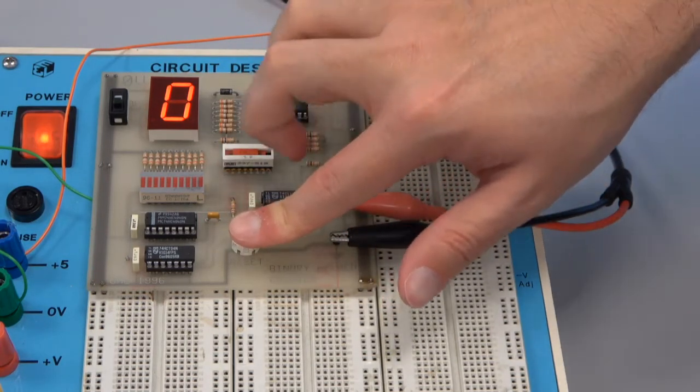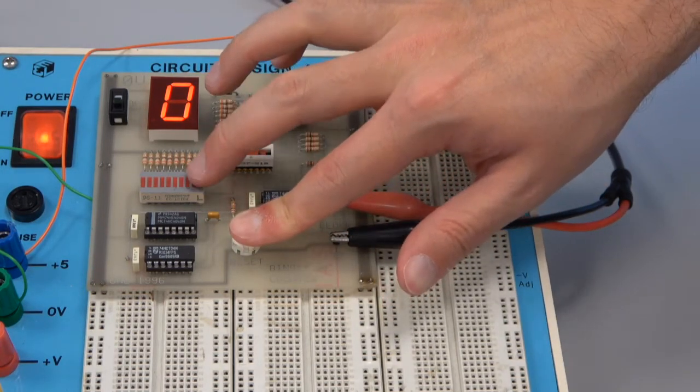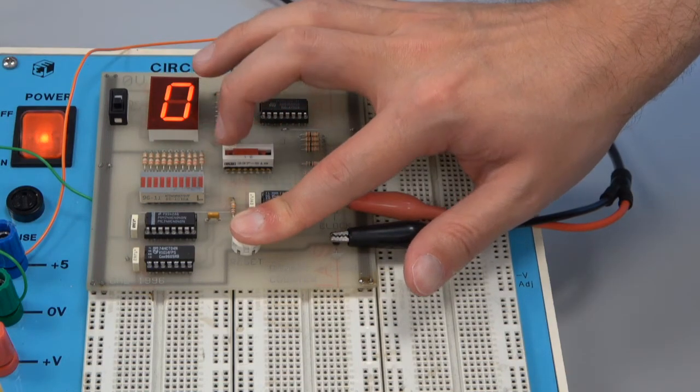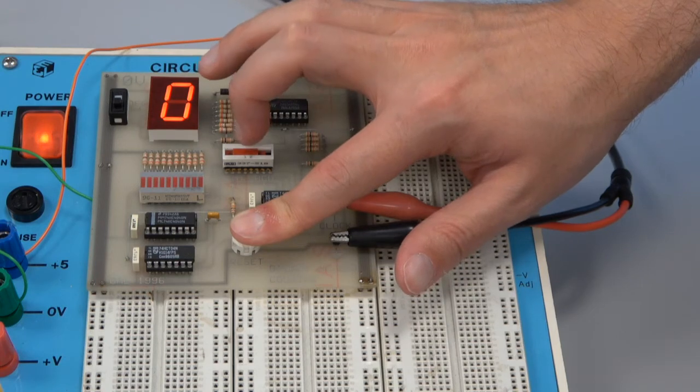So if I hold the reset button down, I can get zero, and then I'm going to count from binary. So it should be two to the zero, two to the one, two to the two, and so on. So let's see how we do with this.